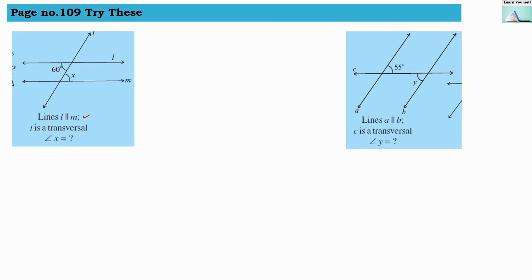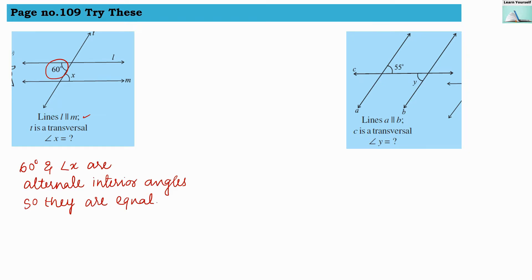As you can see, they have given the measure of the angle that is 60 degrees. Now 60 degrees and angle X, they are alternate interior angles, so they are equal. So we can write here X equals to 60 degrees.